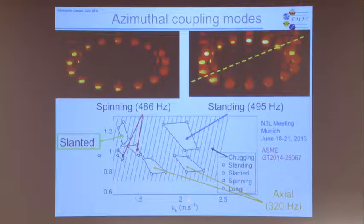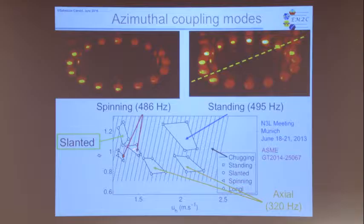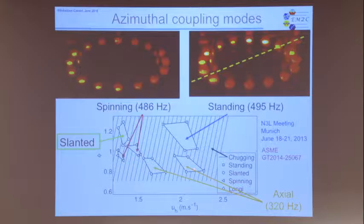When you map this system — this is just a rather crude map, I'll show a more elaborate one — you can find axial oscillations, a standing mode right here, and spinning modes at about the same frequency. Then there is another special case which we call the slanted mode, inclined. So there is a variety of dynamics here, and we started studying that and gave papers at these conferences.